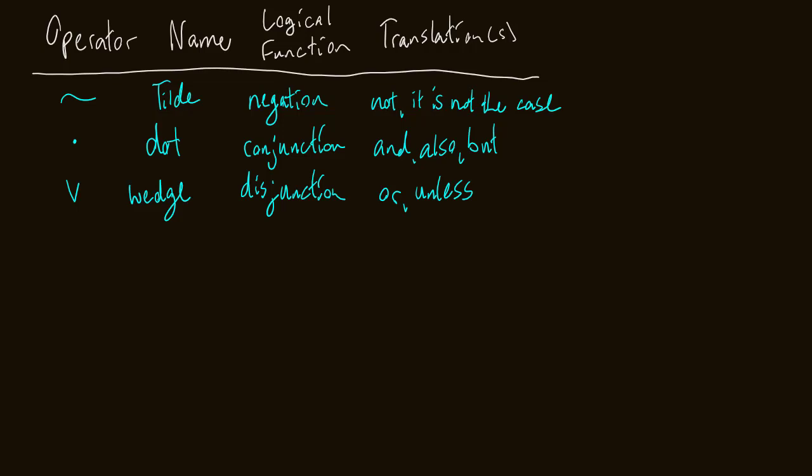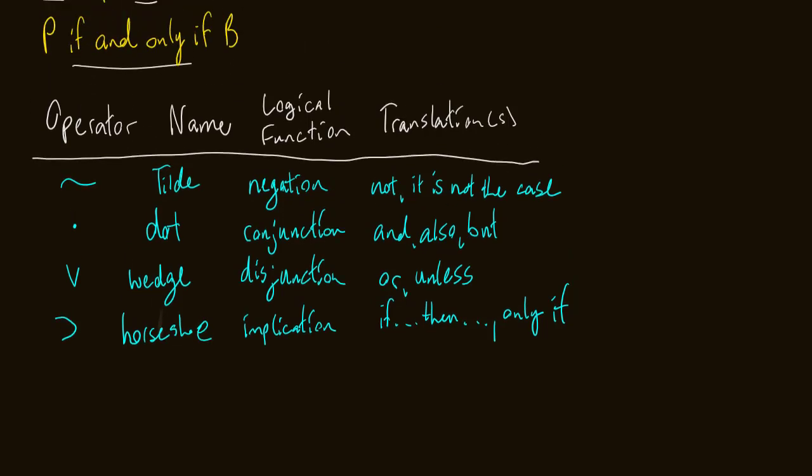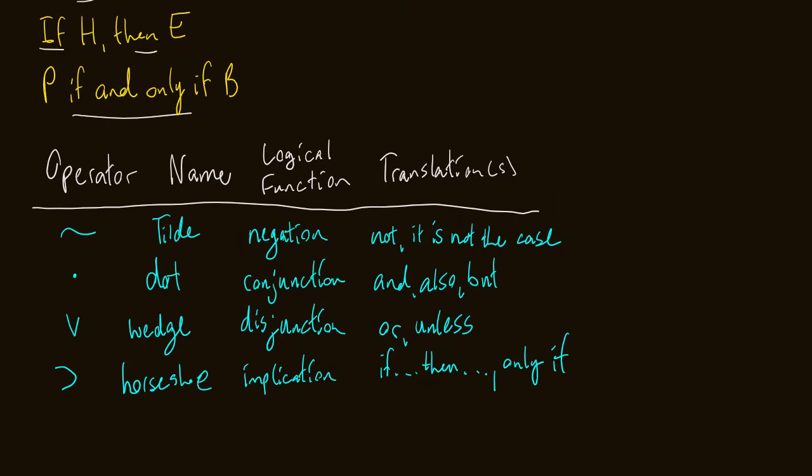Alright, now we've got two more. You got two more, don't clock out on me. We have the horseshoe. The horseshoe kind of looks like a greater than sign. It's not, it's supposed to have a curve to it, horseshoe. What is its logical function? Implication. So we use these for statements of the form if blah blah blah, then blah blah blah. We can also use it when we're saying only if. So implication, if I have this, that implies that. So we use these for if then translations. So right here, I have if H, then E. I will write this as capital H horseshoe E. If H, then E, or H only if E.